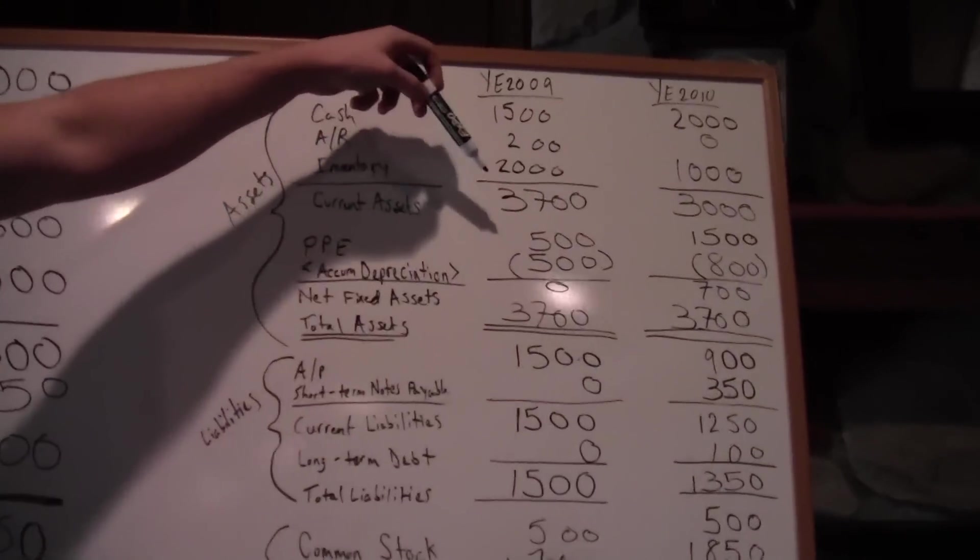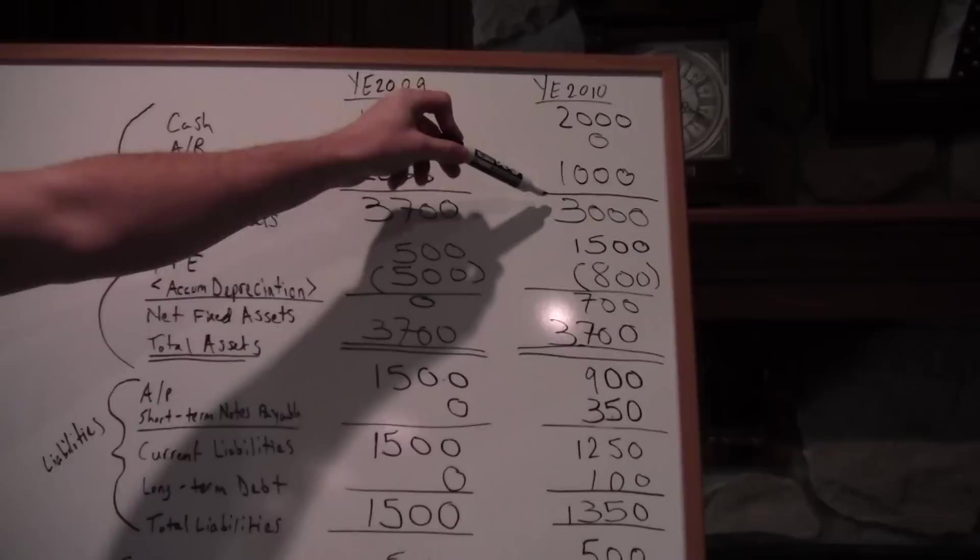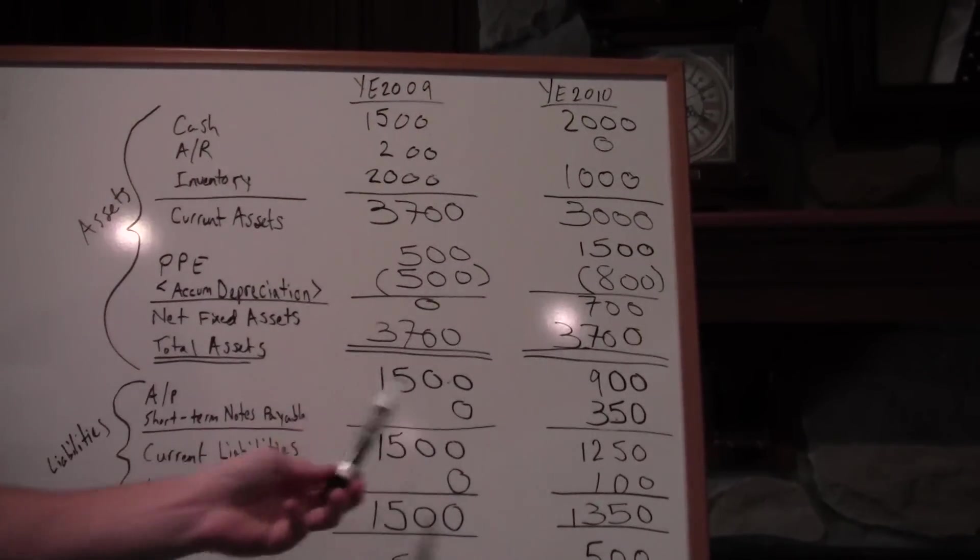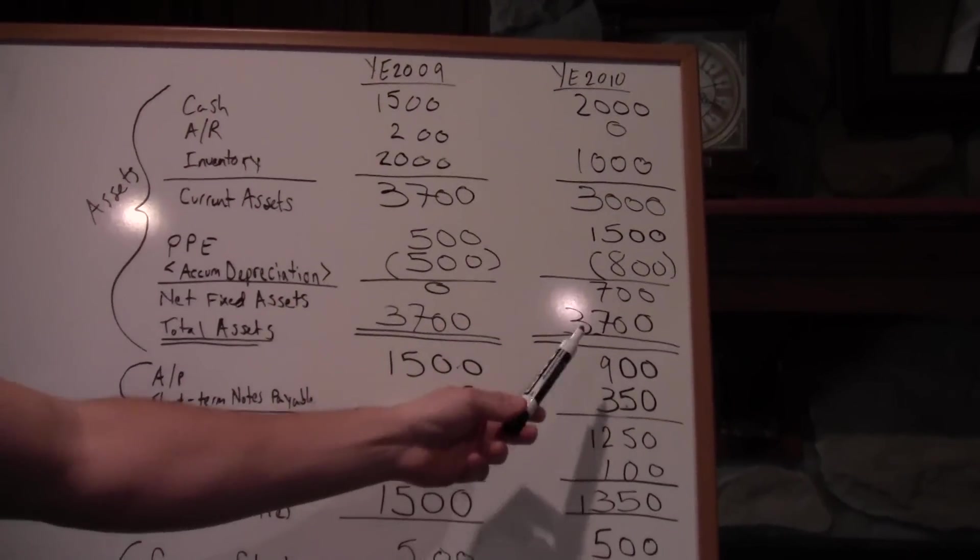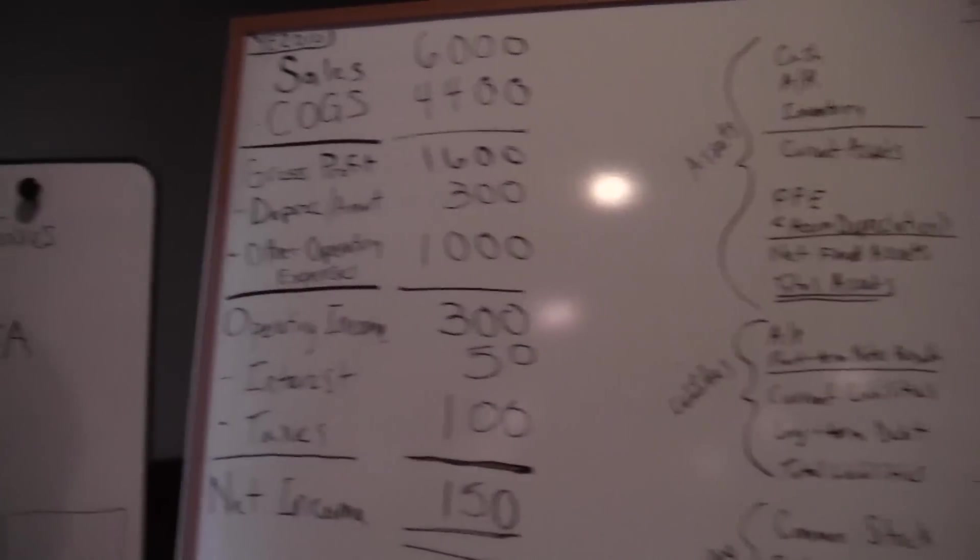So let's go over here. Okay, so now we're looking at current assets. We see that we have current assets of $3,000 in 2010, and our AP, which is our only non-interest-bearing liability, is $900. So that's a change to $2,100. I'm going to write that down here.